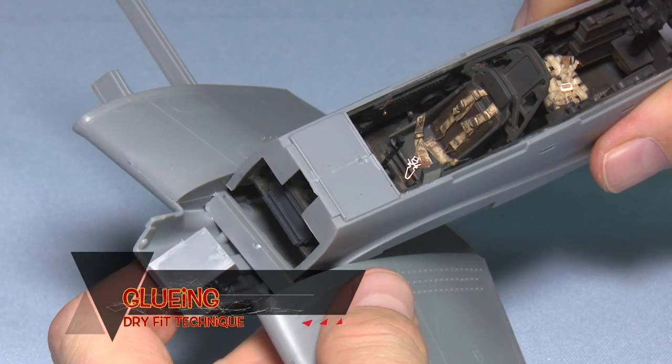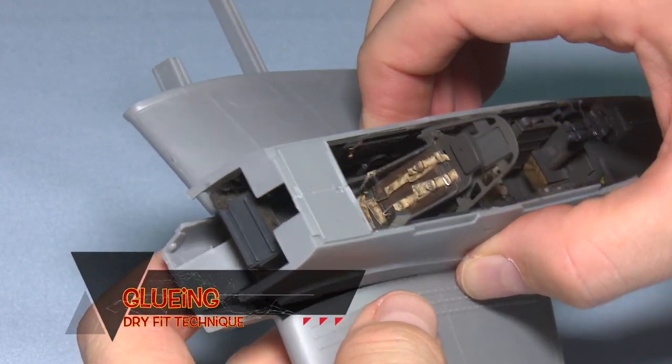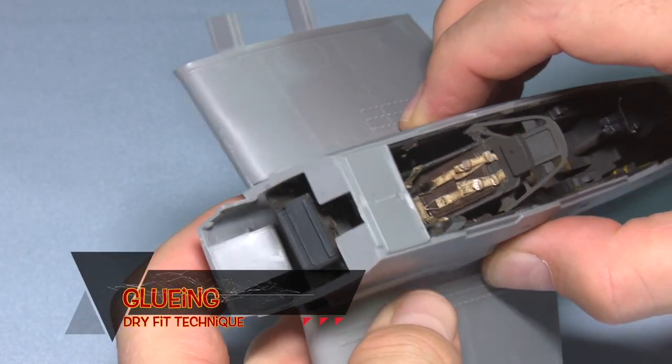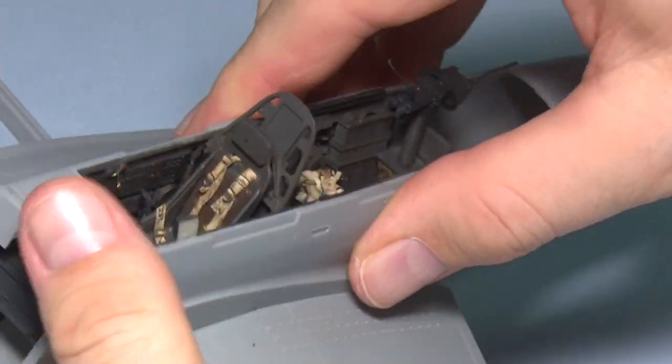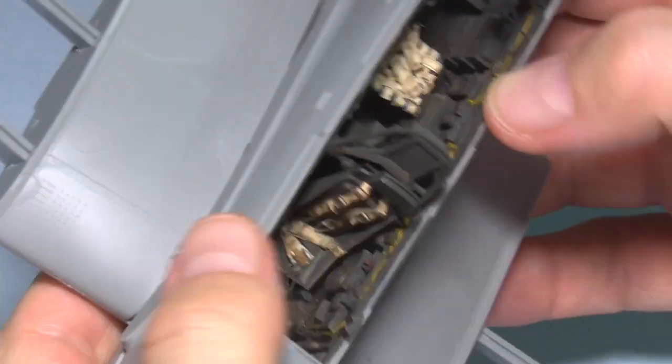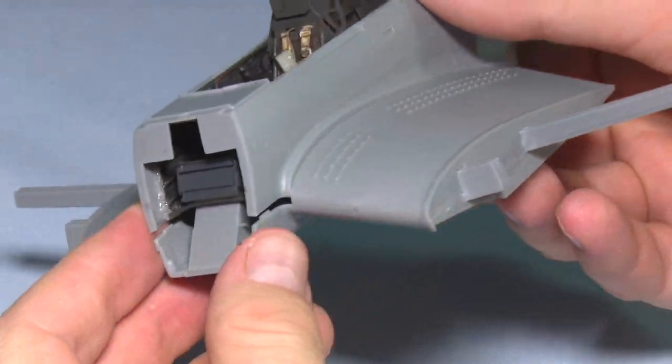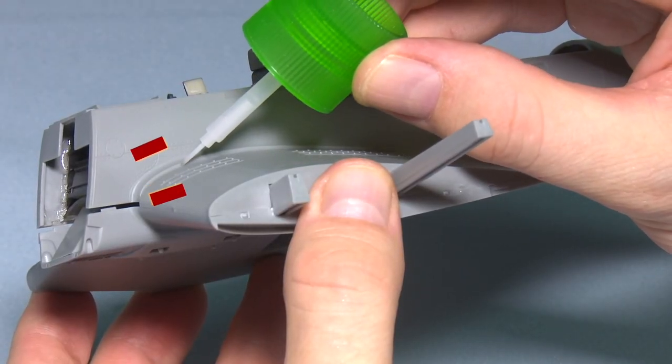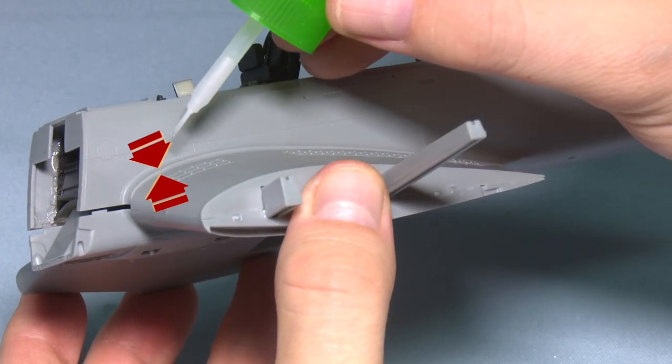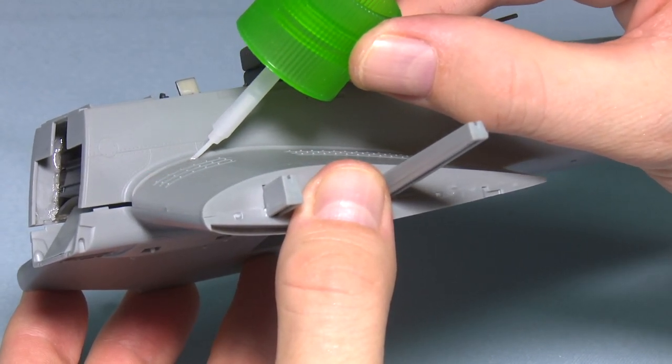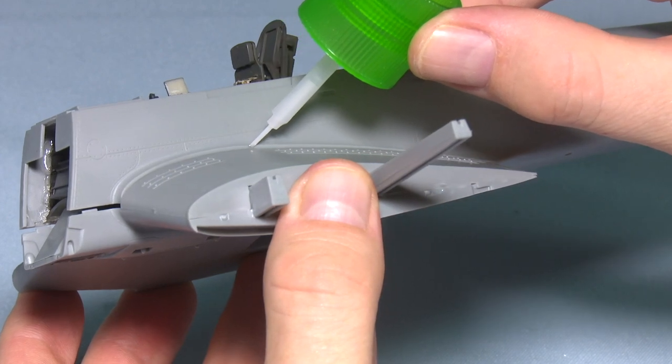Sometimes when mating fuselage parts with the wing roots, it may be difficult to do so due to the tight fit and glue it at the same time. Therefore, sometimes it's actually easier to fit the pieces together, not fully, just with a slight gap, a few millimeters, so it's actually slightly raised, and then apply the glue between the two parts.